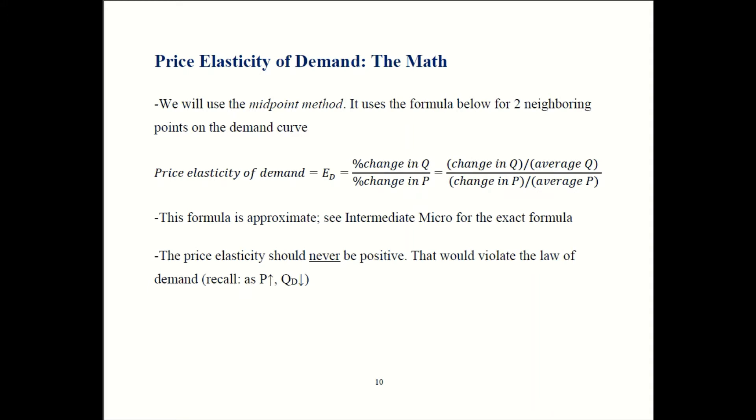So the method we'll talk about here is called the midpoint method. It's an approximation. If you're going to take intermediate micro, you'll see a calculus based formula that's going to be more precise. So what we do is we take two neighboring points on a demand curve and we use this approximation. So the price elasticity of demand, which your book calls ED, will be percent change in Q over percent change in P.